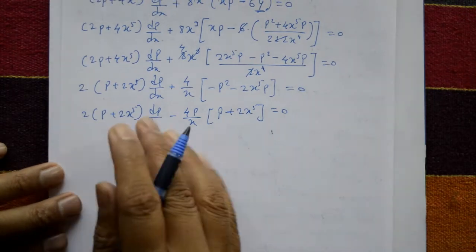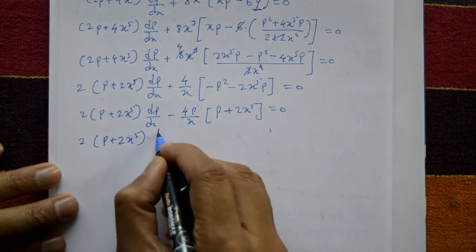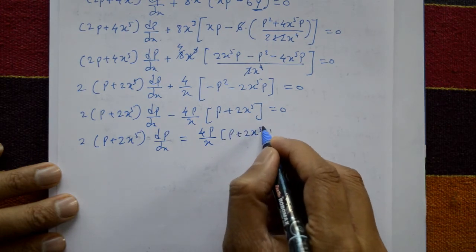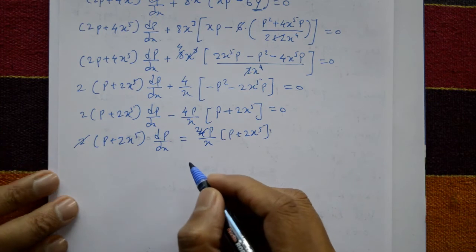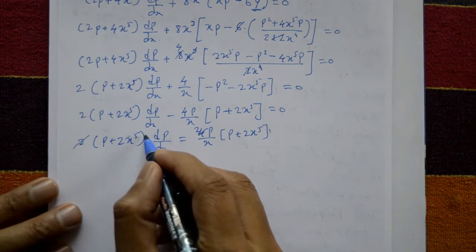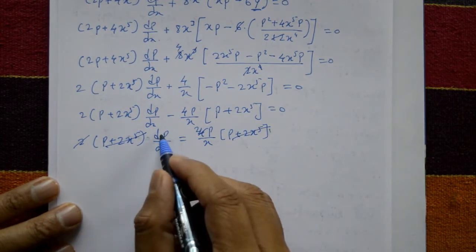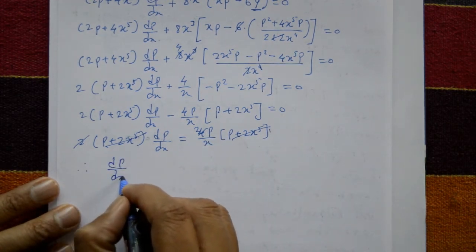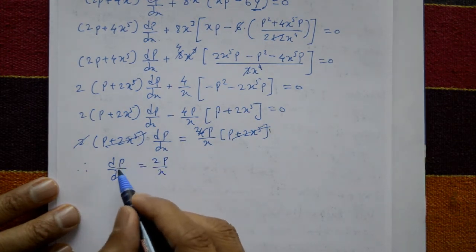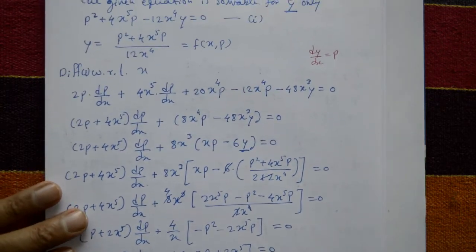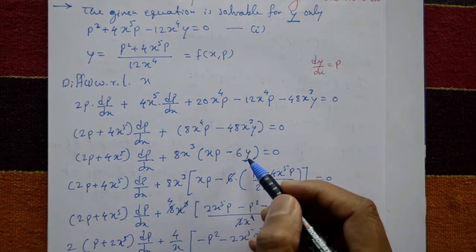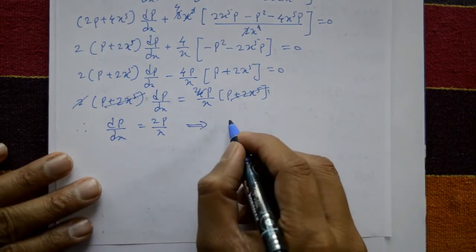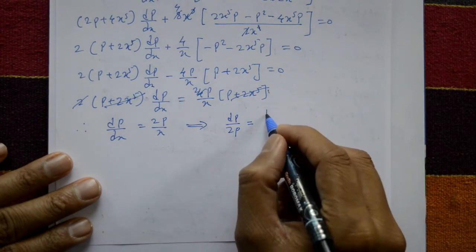Therefore dp/dx equals 2p over x. The variables are now separated: dp/dx equals 2p/x. Separating: dp over 2p equals dx over x. Now integrate both sides.